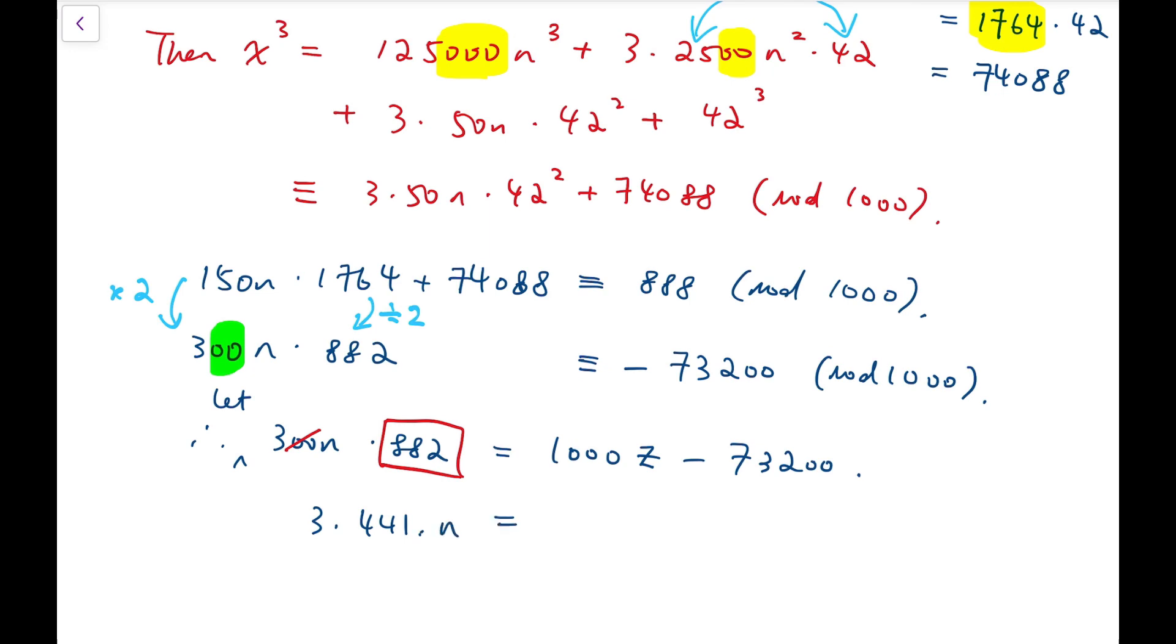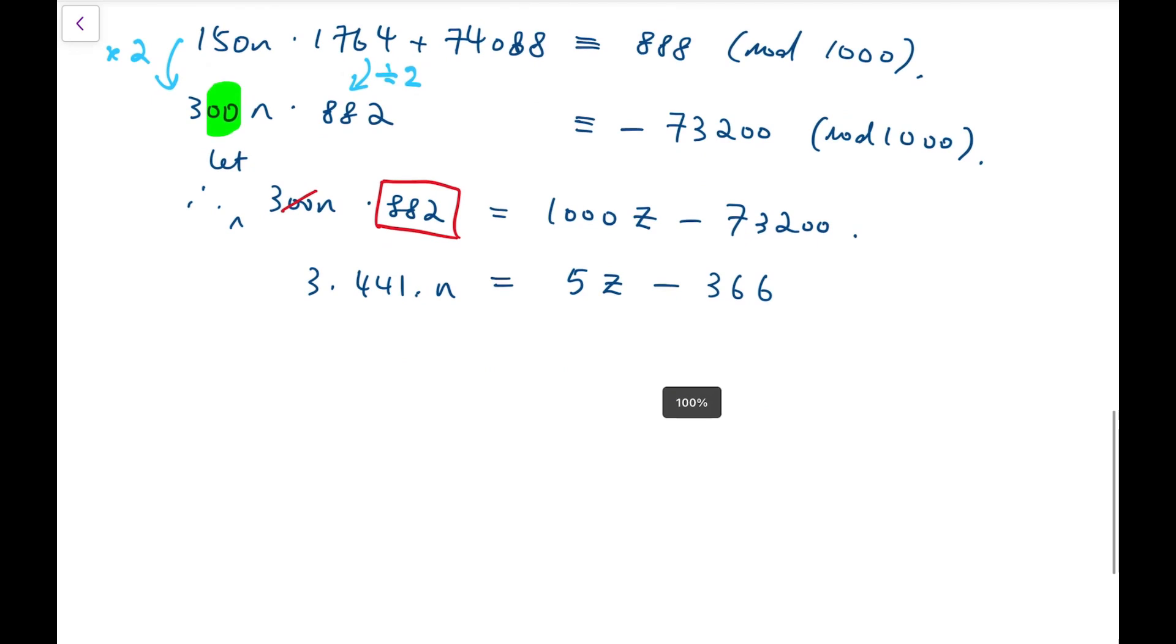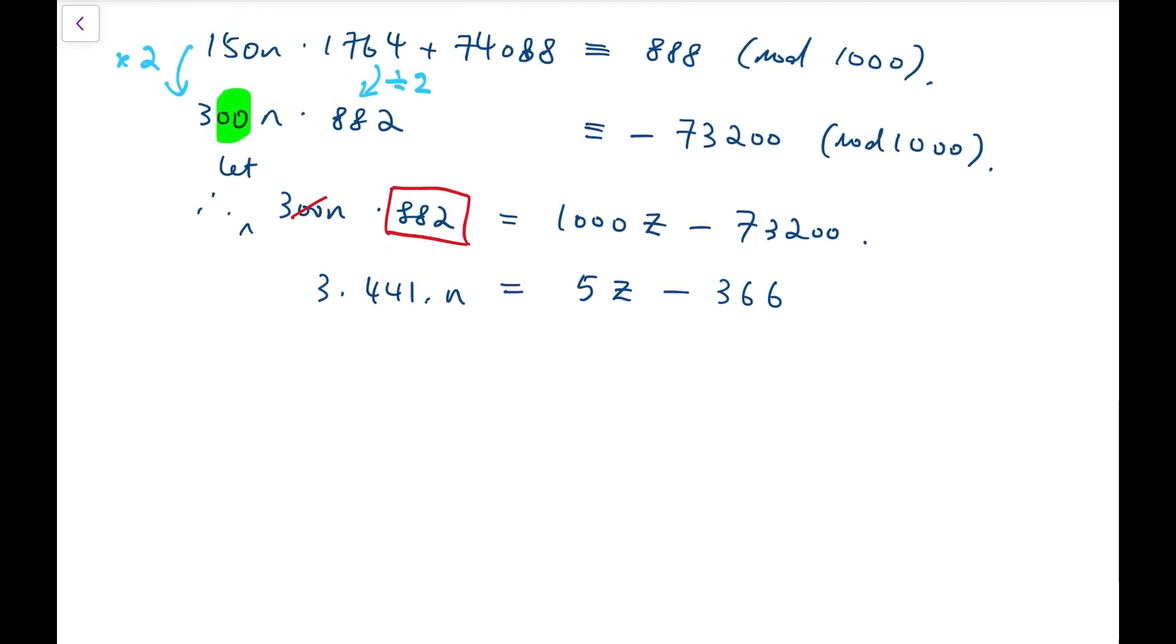And now, using a similar argument as above, we know that we are going to rewrite n in terms of mod 5. So, I'm going to take mod 5 on both sides. And, I get 3n is congruent to minus 1 mod 5. And, we know this is actually equivalent to 4 mod 5. And, by checking, you know that n can only be 3 mod 5.